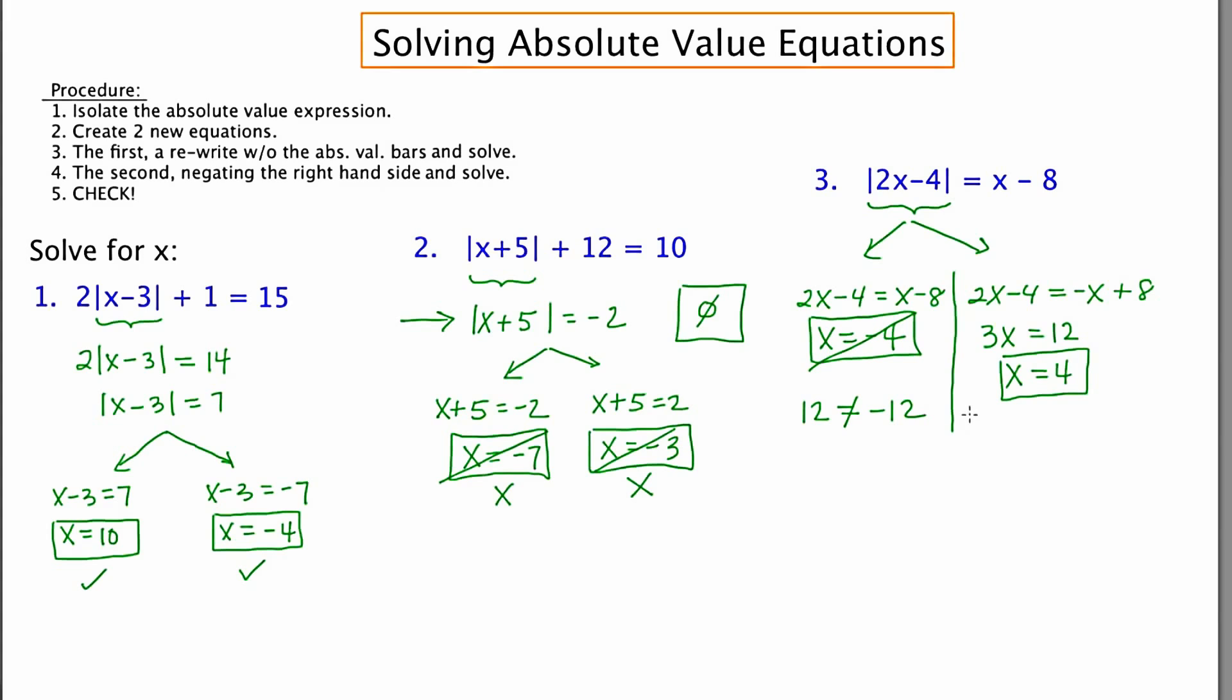Let's try 4. 2 times 4 is 8, 8 - 4 is 4, absolute value 4 is 4. And over here we get 4 - 8, which is -4. So this does not equal either. So in fact, neither of these check, and we end up getting no solution for this as well.